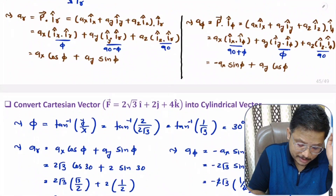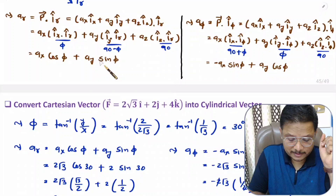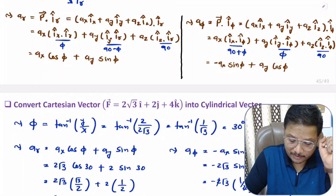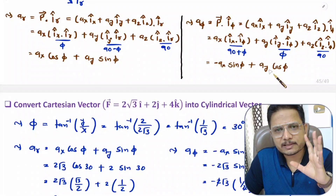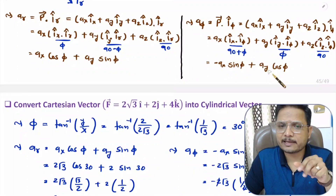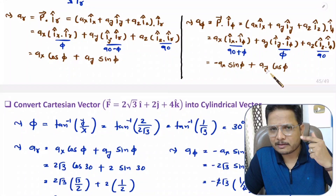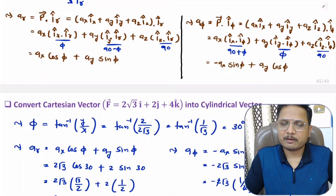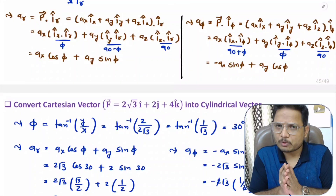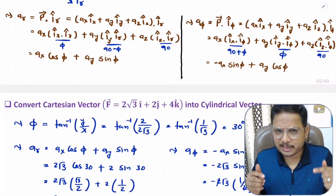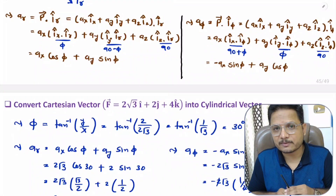Remember these two essential equations: AR = Ax·cos(phi) + Ay·sin(phi), and Aphi = −Ax·sin(phi) + Ay·cos(phi). If you practice this process one or two times, you can easily solve it in an examination. Thank you so much for watching this video. If you have anything to share, just note it down in the comment section — I will be happy to help you.